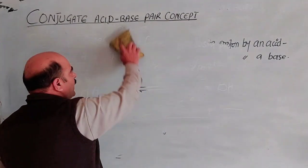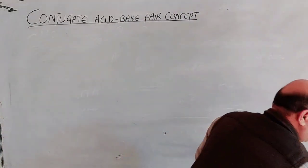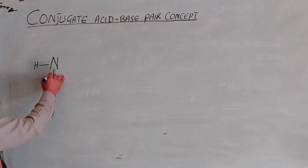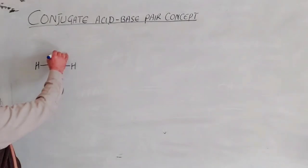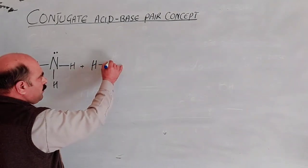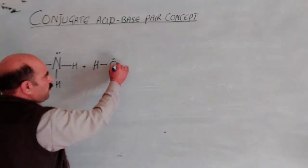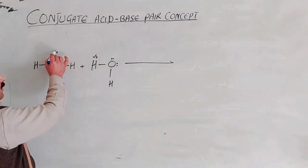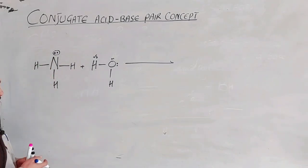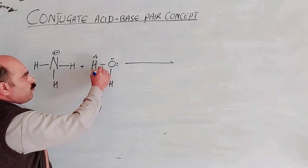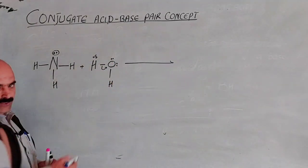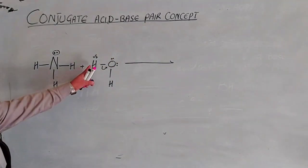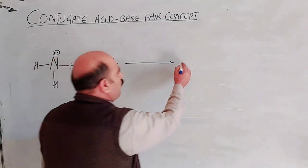Another example: ammonia NH₃. Nitrogen has a lone pair of electrons. When NH₃ reacts with water H₂O, the oxygen of water has a lone pair of electrons and partially positive hydrogen. Nitrogen accepts a proton from water — the bond in water is breaking and a coordinate bond forms with nitrogen, giving NH₄⁺.